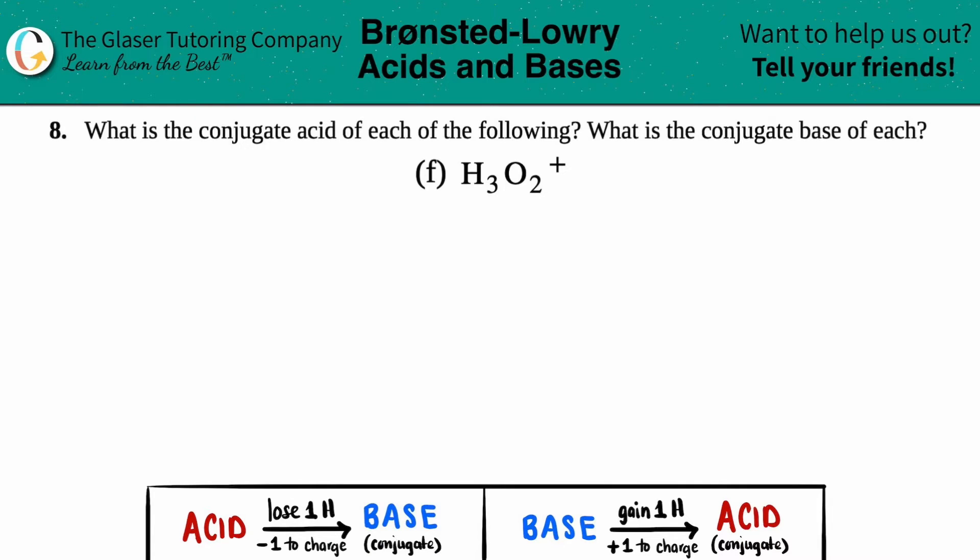Number eight: what is the conjugate acid of each of the following, and then what's the conjugate base of each? We have letter F out of the bunch, so in this case we have to find the conjugate acid and the conjugate base of H3O2 plus.